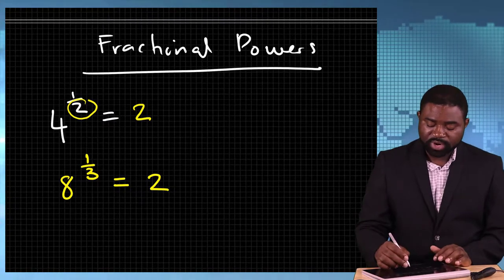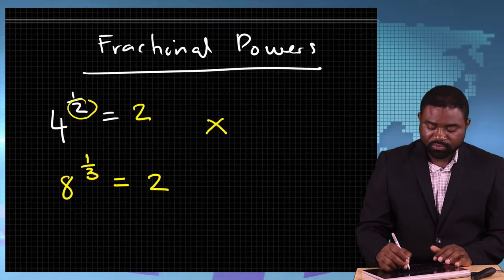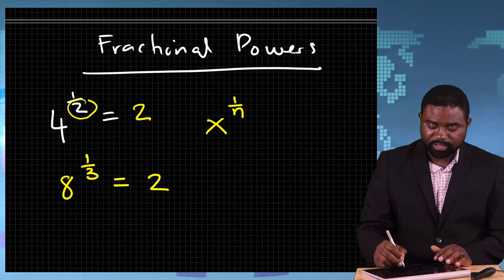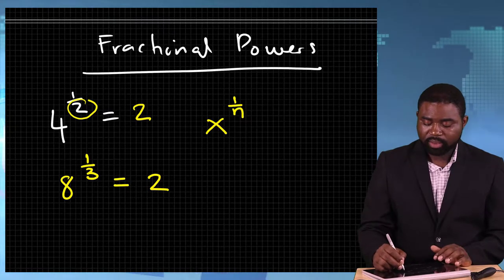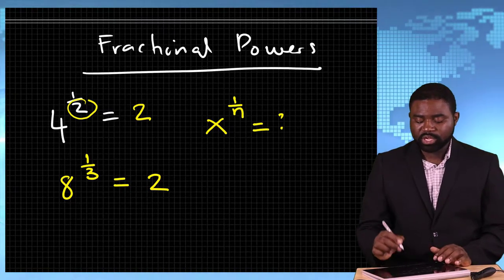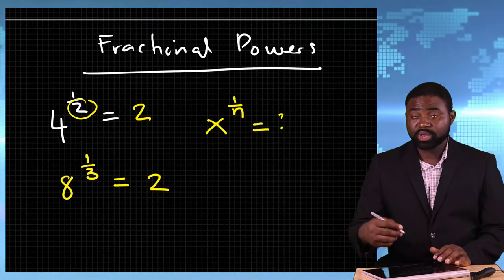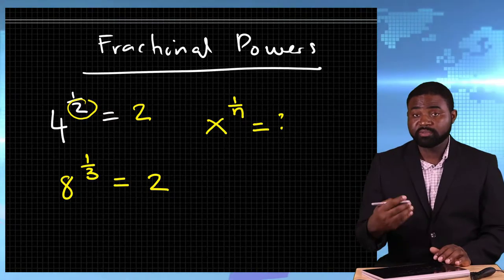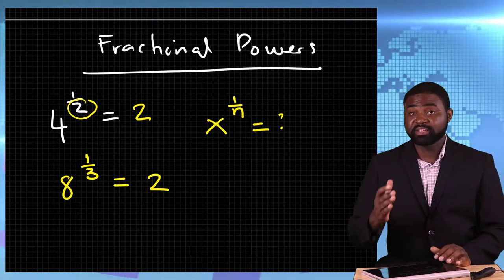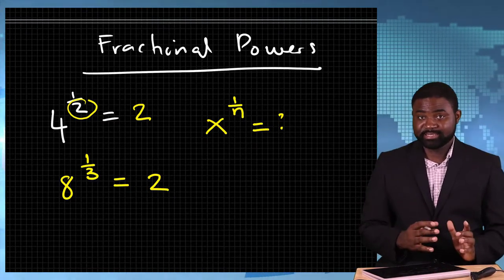So if we write the number x raised to the power 1 over n, this represents we are looking for a number which, when multiplied by itself n times, will give the number x.